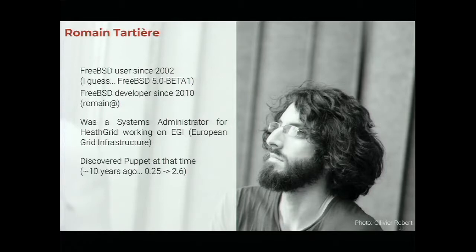I was a grid site administrator, and at that time I started to wonder: how can I manage many computer nodes which have basically the same configuration in an efficient way? And at that time, there was a new tool called Puppet. I was there when, 10 years ago, they decided to name the version following 0.25 as 2.6, and changed the position of the dot in the version number.